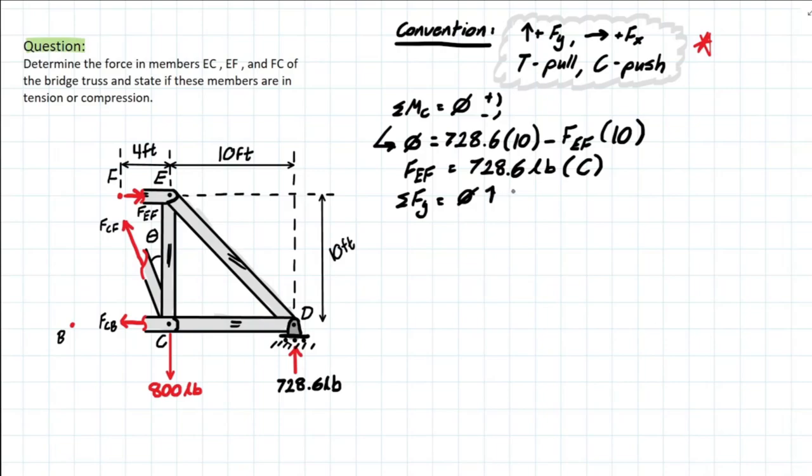So, we can go ahead and solve as we normally would and take FCF. But we need the component of Y. So, it's going to be the adjacent side to this angle. So, we're going to be taking the cosine of theta.